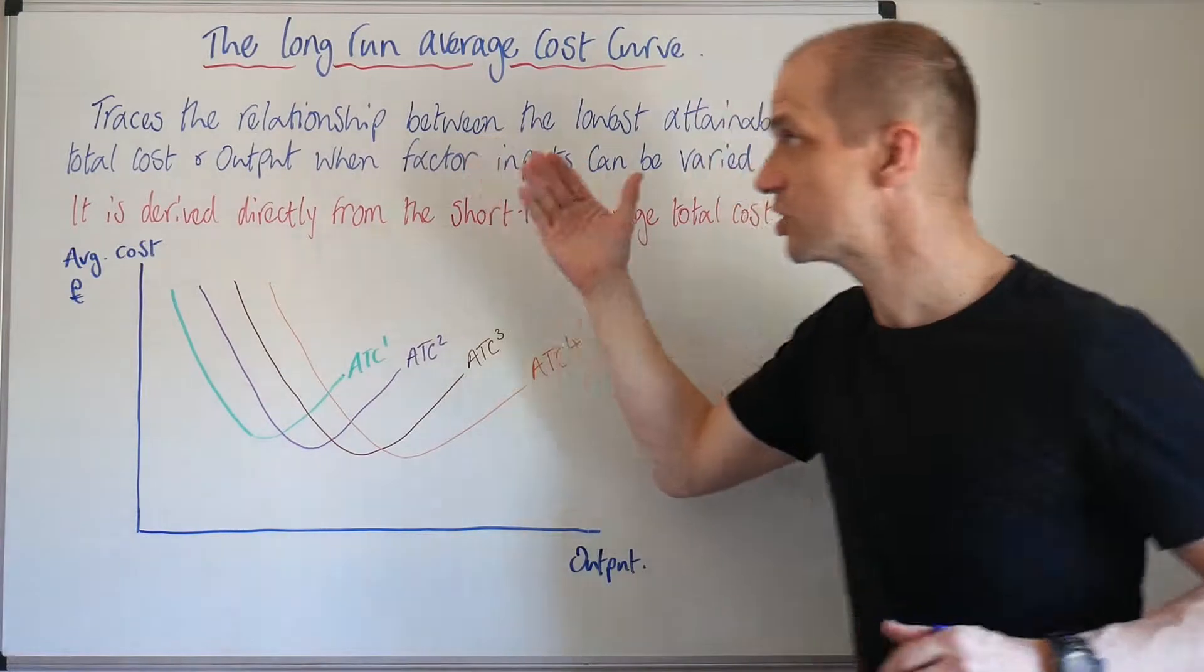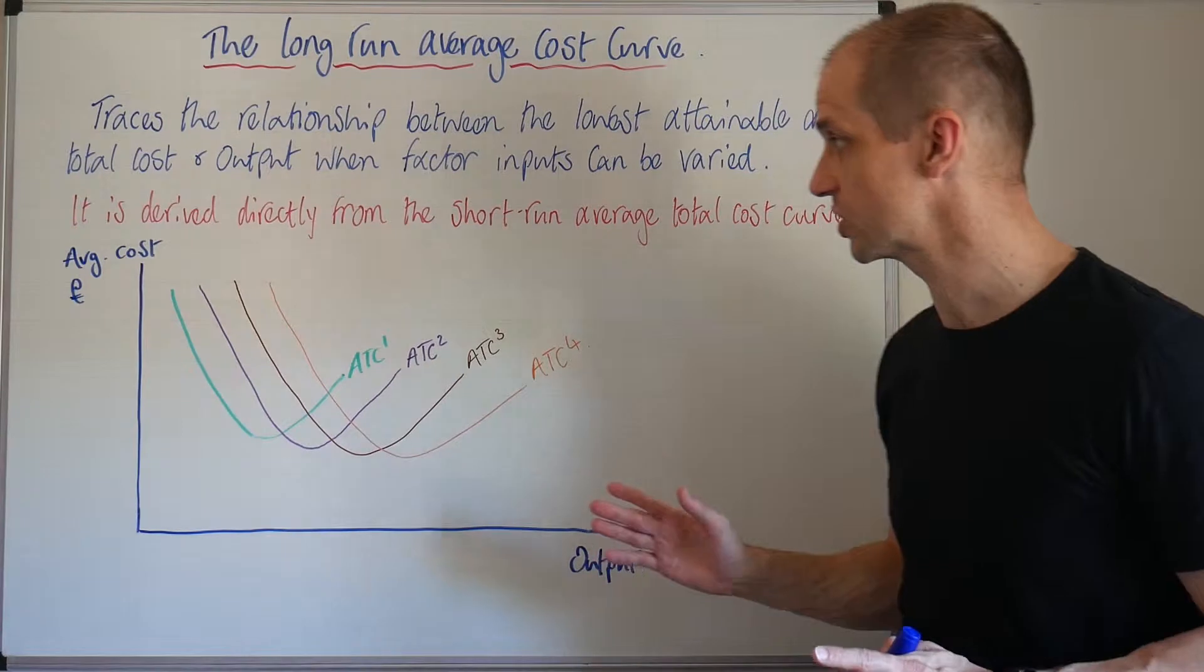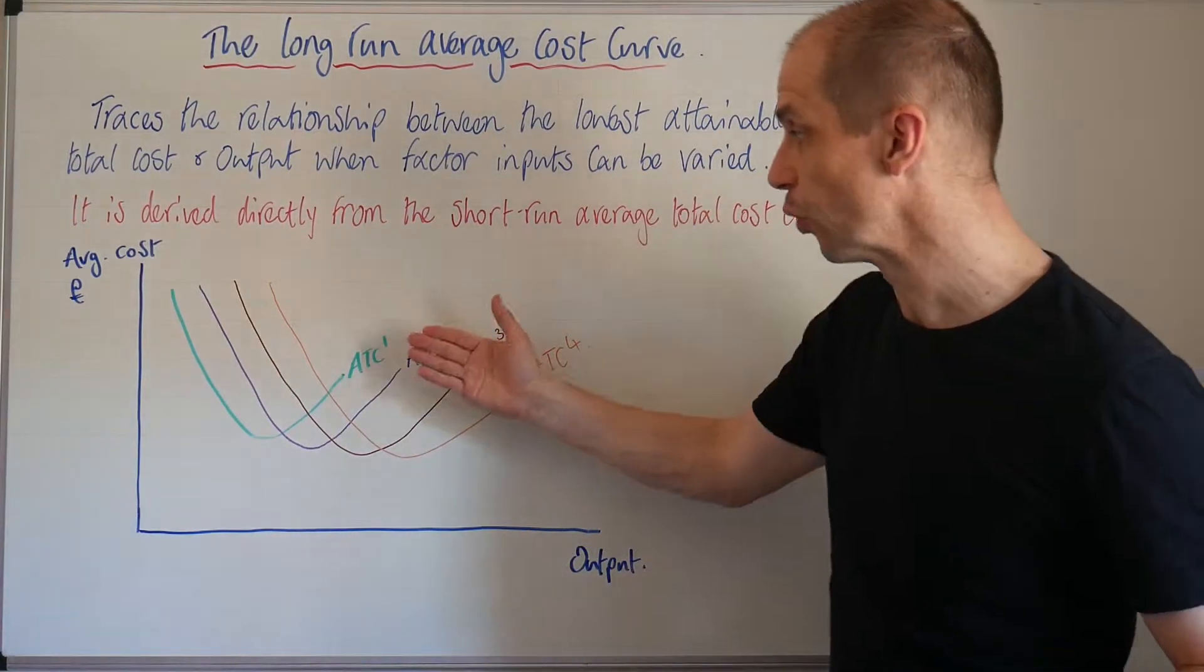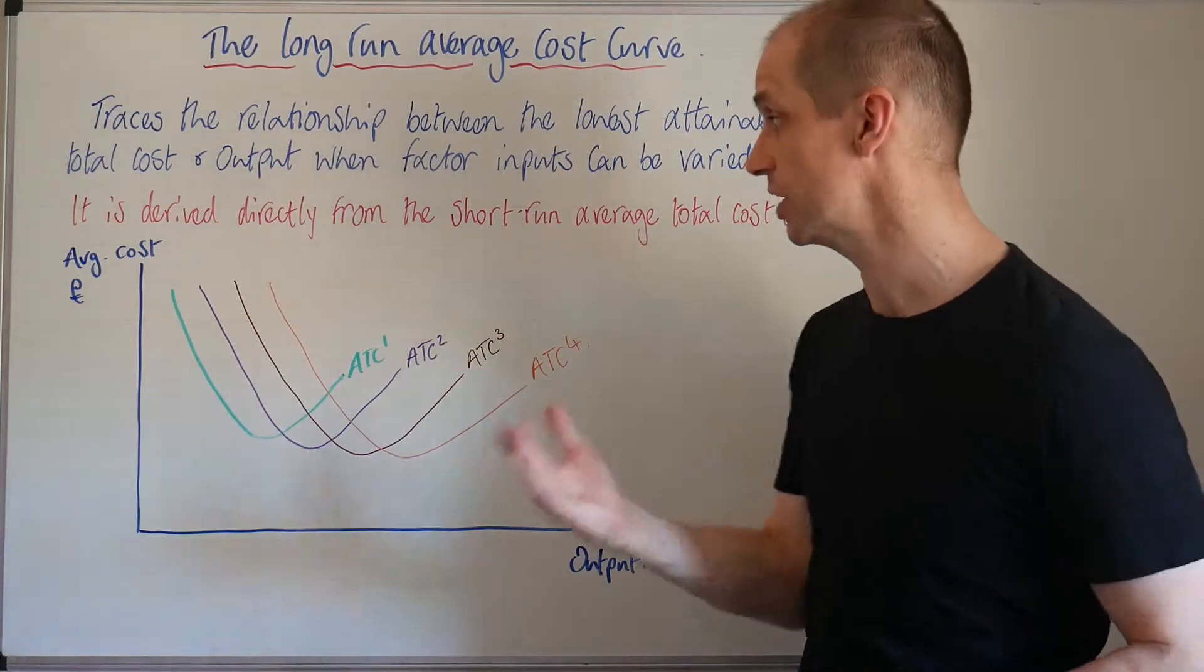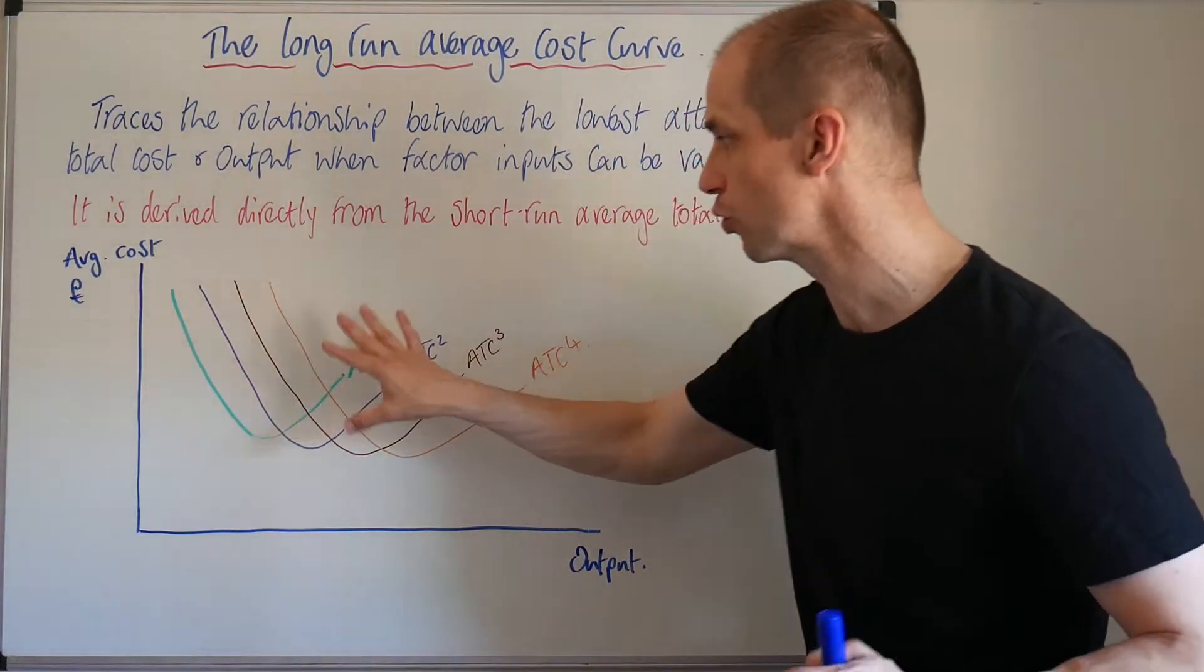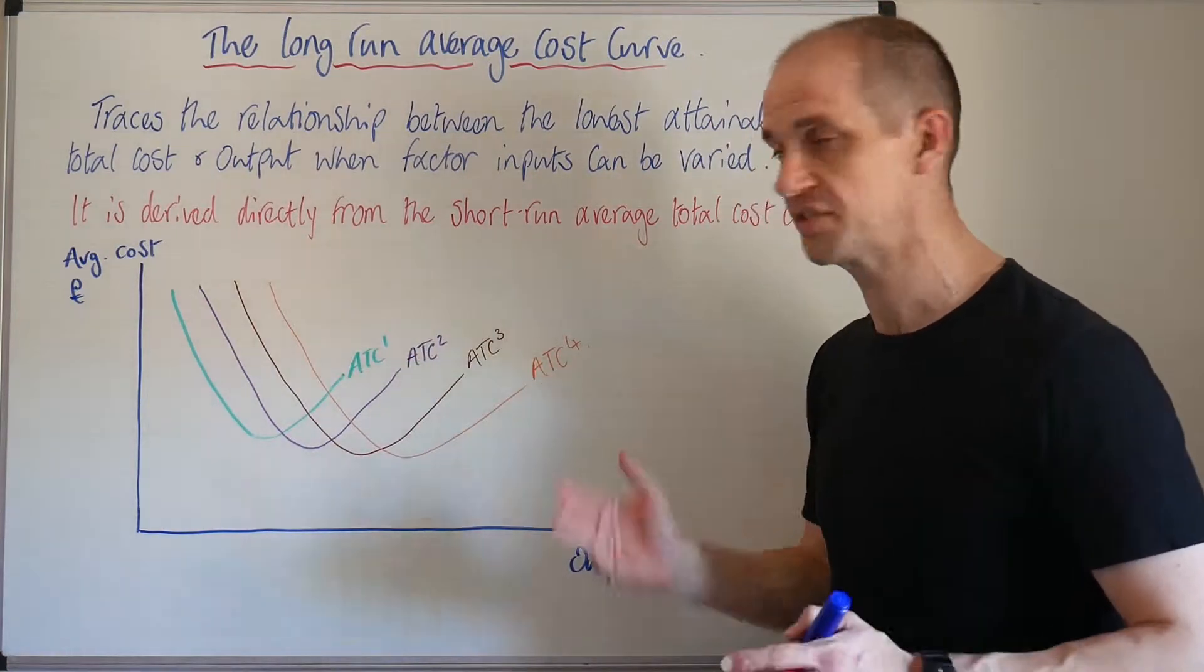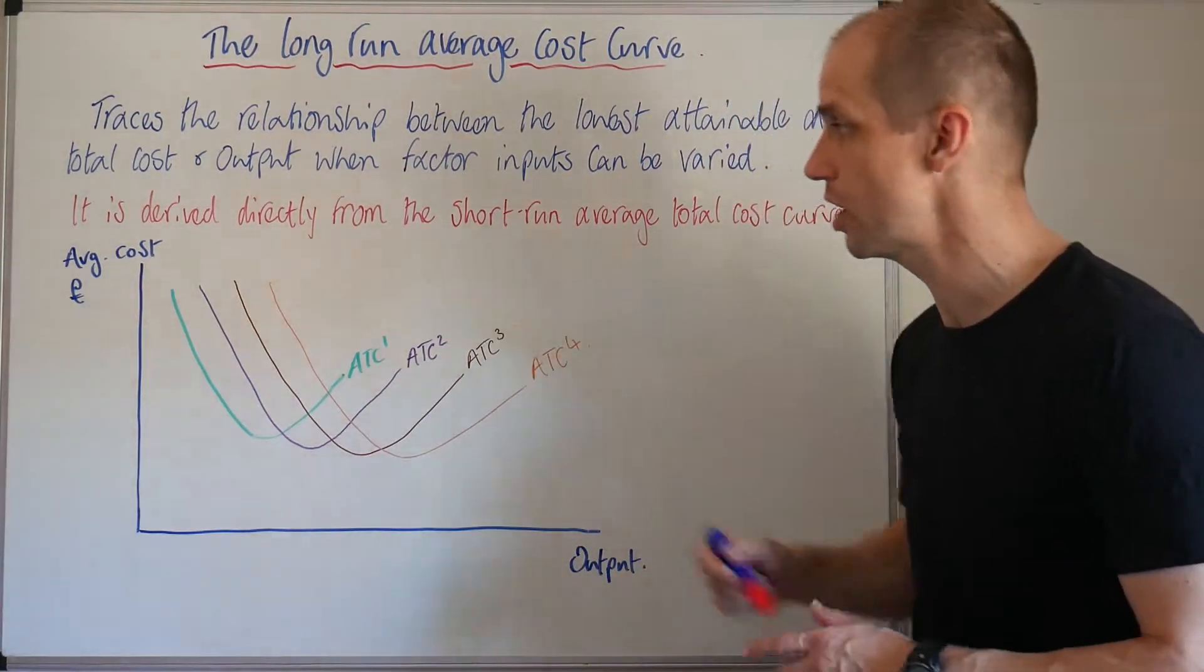Now this is derived directly from the short run average total cost curves. Previously we had considered four different scenarios based on four different plants within these cost curves. I've just drawn each of these cost curves out to symbolise the relationship that each of them had with one another.